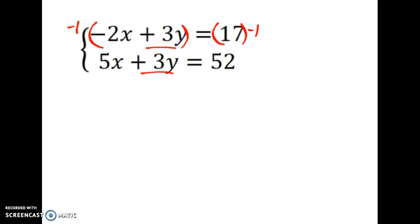And then I'm going to rewrite it again over to the right. So negative 1 times negative 2x, that's 2x. Negative 1 times 3y, that's negative 3y. And then 17 times negative 1 is negative 17. So that's my new first equation. It's equivalent to my first one. I just multiplied both sides by negative 1. And then I'm just going to write the second equation straight out. 5x plus 3y equals 52.